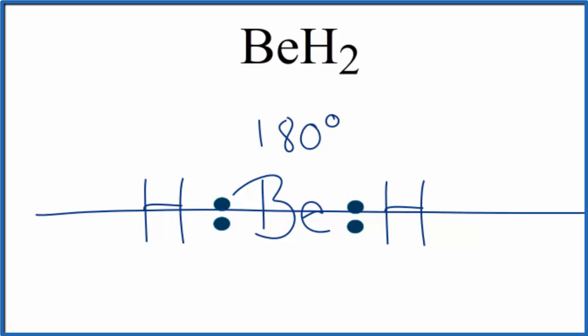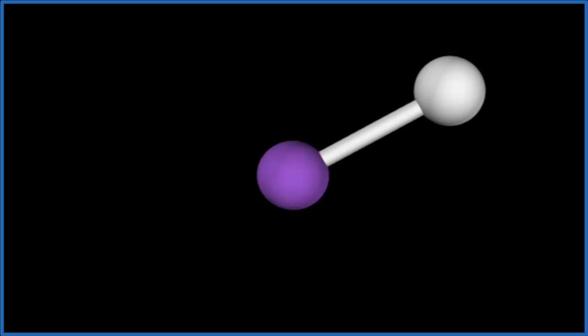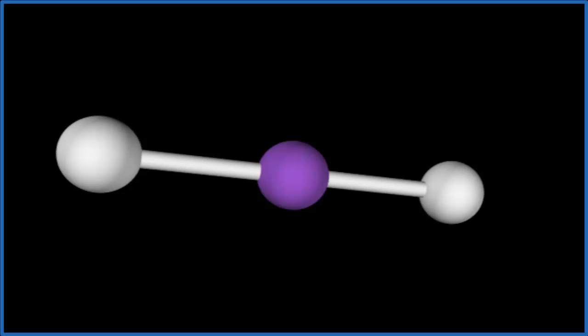Let's look at a visualization of that. So the central purple atom represents our beryllium atom. We're going to add two hydrogen atoms. One, and then we add the second one, spreads out as far away from each other as they can.